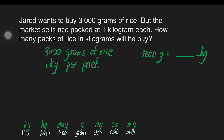Now, we will identify how many steps will be from gram to kilogram. That is 1, 2, and 3. If you notice, we go to the left 3 times — that is 3 steps. 1 step is equivalent to divided by 10, divided by 10, divided by 10.